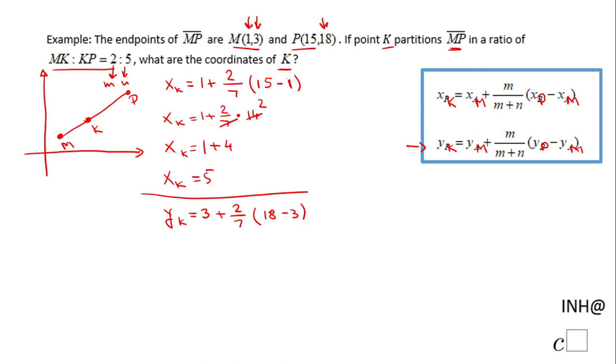So from here it's simplification. We have 3 plus 2/7 times (18 minus 3 is 15). You notice here we cannot simplify, so we're going to multiply. We have 2 times 15, that is 30, over 7.